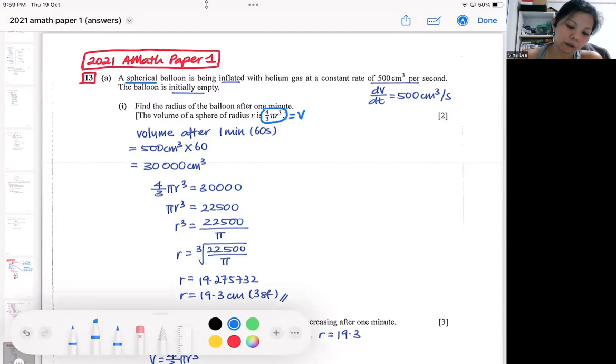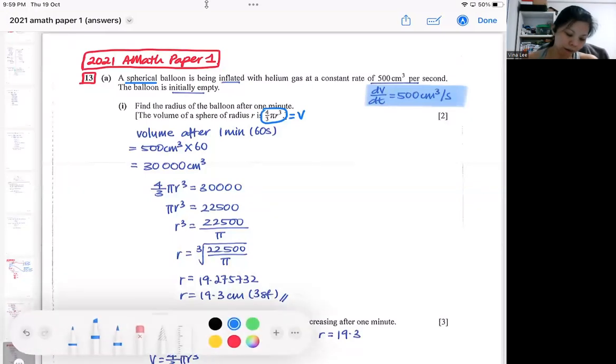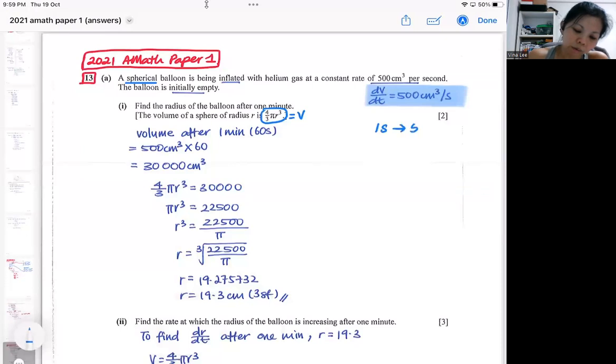So what you need to understand by the 500 cm³ per second is, this will be the symbol dV/dt equals 500 cm³ per second. Otherwise, in a very layman term, you will think about every one second we are going to input 500 cm³ of gas. So in a differentiation term, it will be dV/dt, but in a layman idea, it will just be every one second we will pump in 500 cm³ of helium gas.